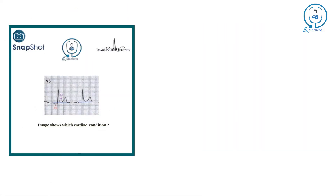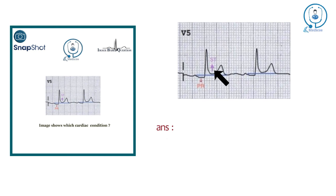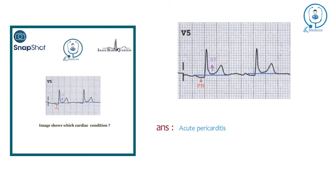Let's talk about our next question, which is based on ECG. The question is: this image shows which cardiac condition? Let's zoom out this image. So what are the characteristic findings you can observe in this ECG? Look carefully. You can see widespread concave ST elevation and PR depression. This is the characteristic finding seen in acute pericarditis — the inflammation of the pericardium secondary to infection, localized injury, or systemic disorders, producing characteristic chest pain, dyspnea, and serial ECG changes.